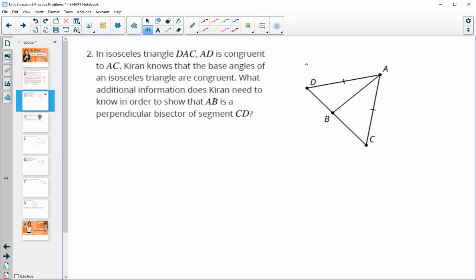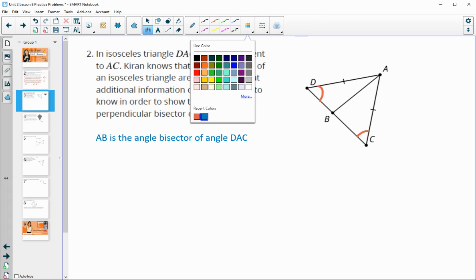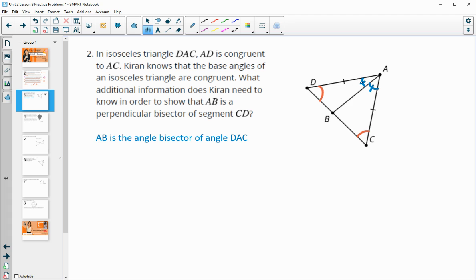Number two, in an isosceles triangle, in this isosceles triangle, AD is congruent to AC. Kiran knows that the base angles of an isosceles triangle are congruent. So across from these congruent sides are the congruent angles. What additional information does Kiran need in order to show that AB is the perpendicular bisector? Okay. So that this is the perpendicular bisector of this segment. So there's a couple different things you could say here. So one would be that AB is the angle bisector of angle BAC. And the reason that that would be helpful is if we had this angle marked congruent to this angle, then we'd have angle side angle to prove that the triangles are congruent, meaning that these two would have to be congruent to each other, making them 90. And then these segments would have to be congruent. So perpendicular bisector. So that's one thing we could know.